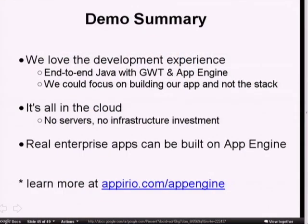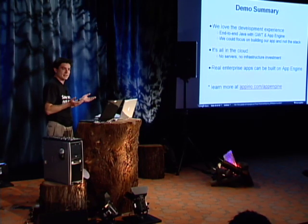So to close up, there are three points we wanted to bring to the table. One, we love the development experience — it was integrated, end-to-end Java, GWT on the front end, App Engine on the back end, no hand-coded HTML, cross-browser compatible, and we could debug everything in Eclipse end-to-end, all the way from data store up to browser. Two, the app is completely in the cloud without servers — with no upfront infrastructure cost, we were able to get our app out there. And third, we now believe that real enterprise apps can be built on App Engine. In a little time, using standard Java, we were able to build a customer app and get it out there. I appreciate the time — thanks very much.